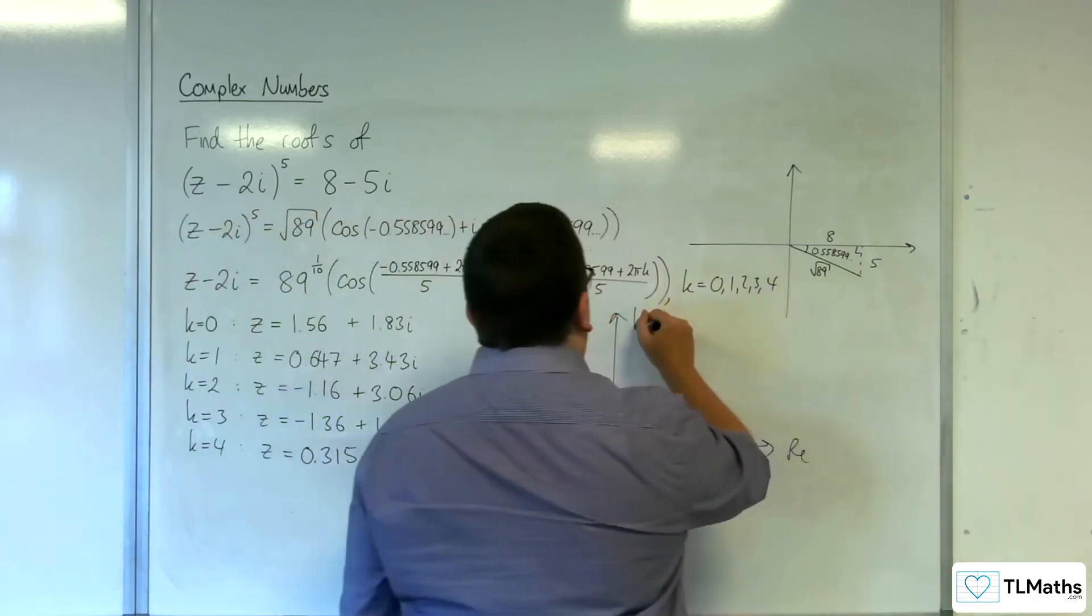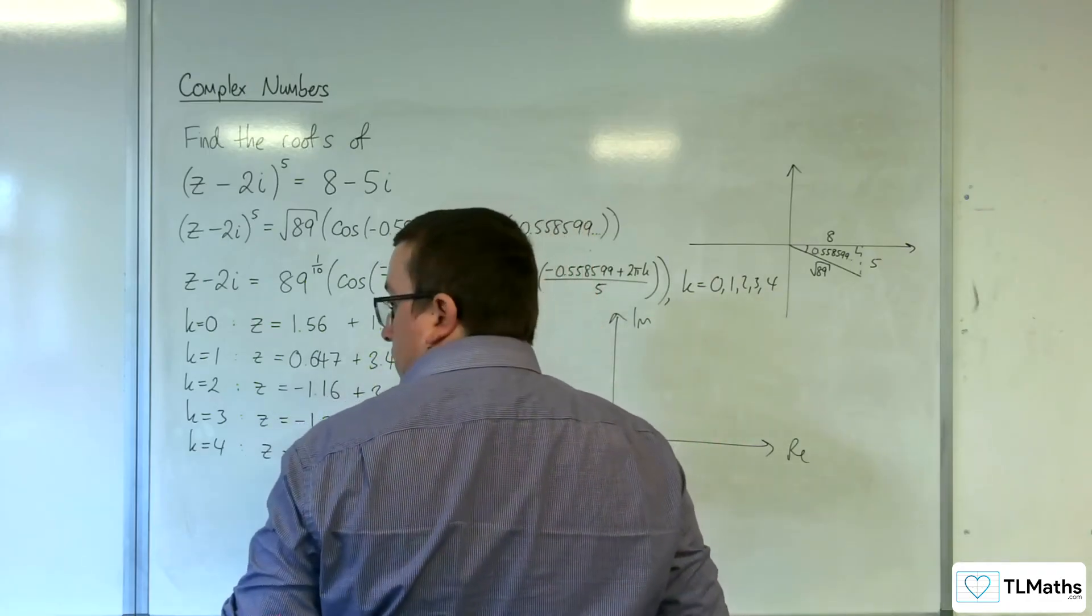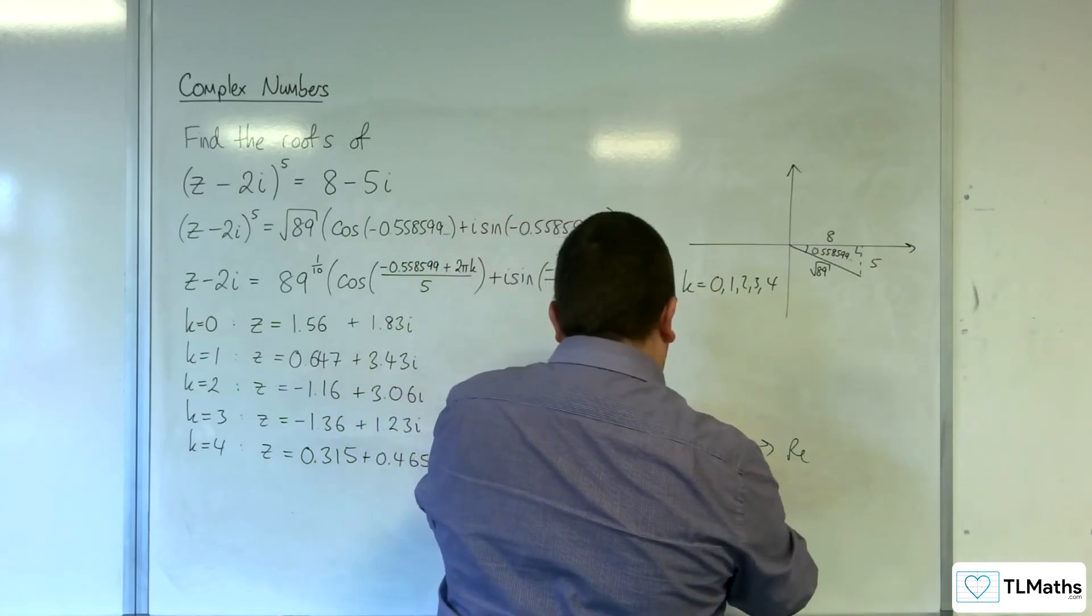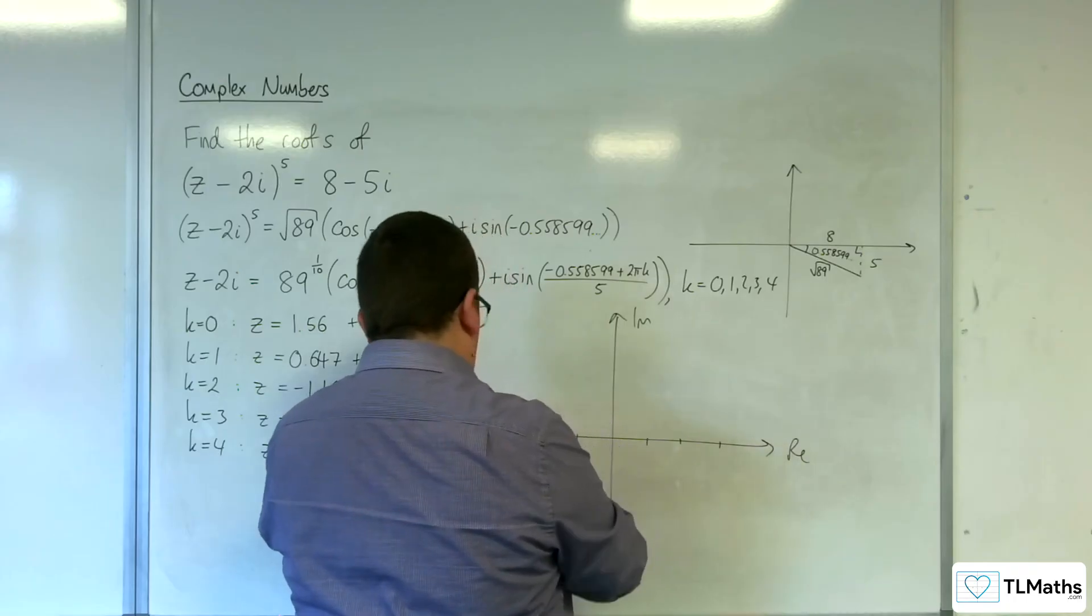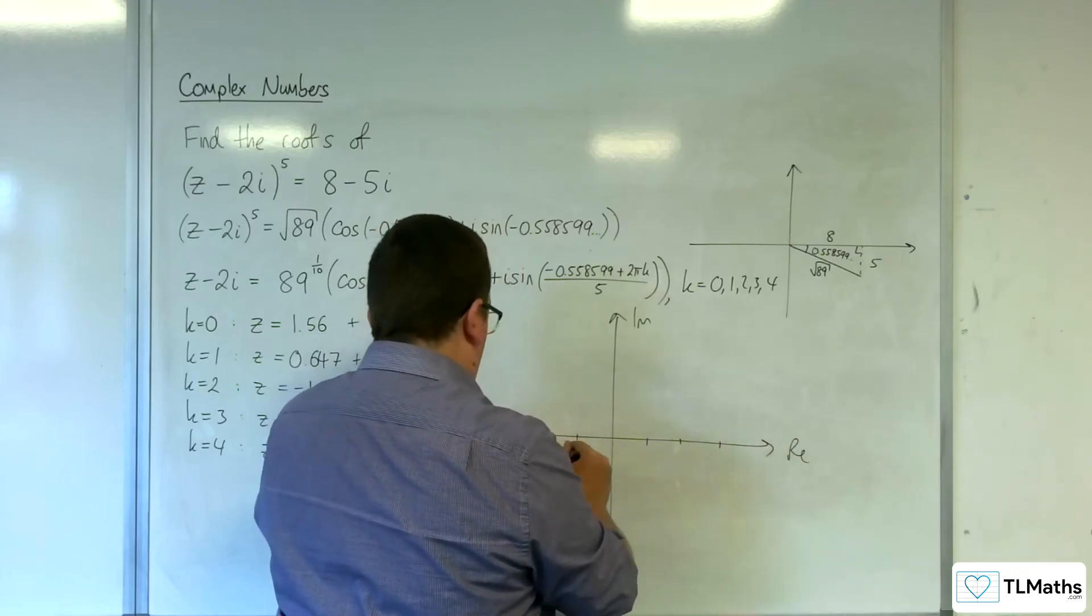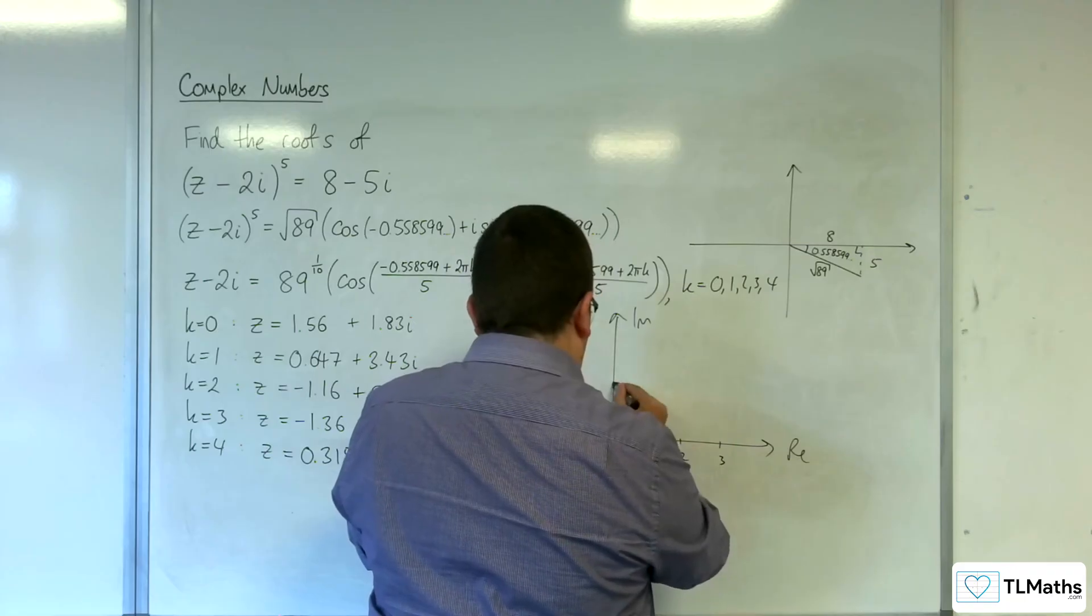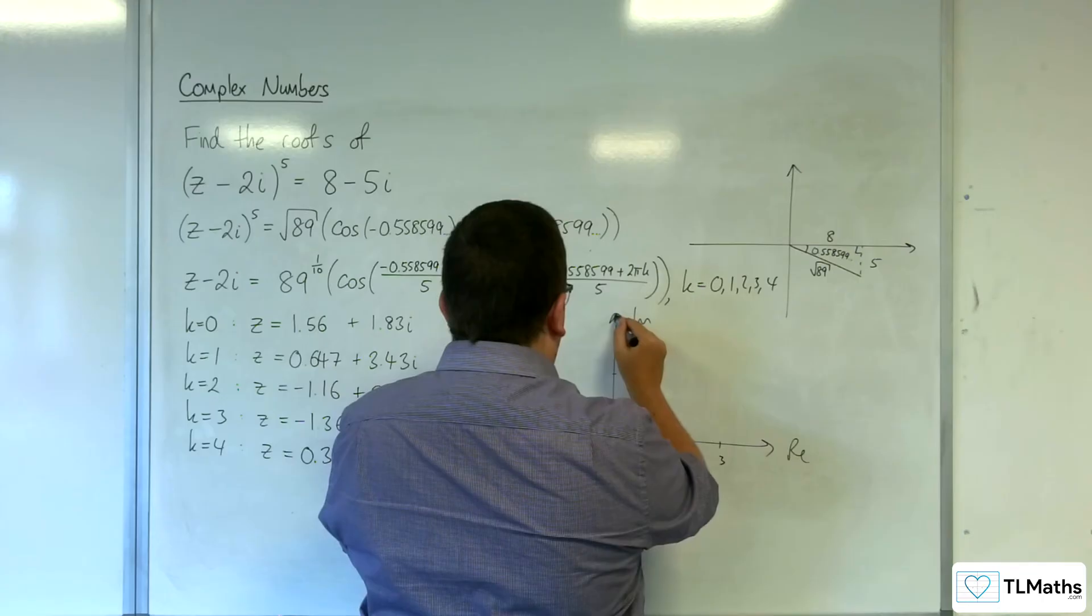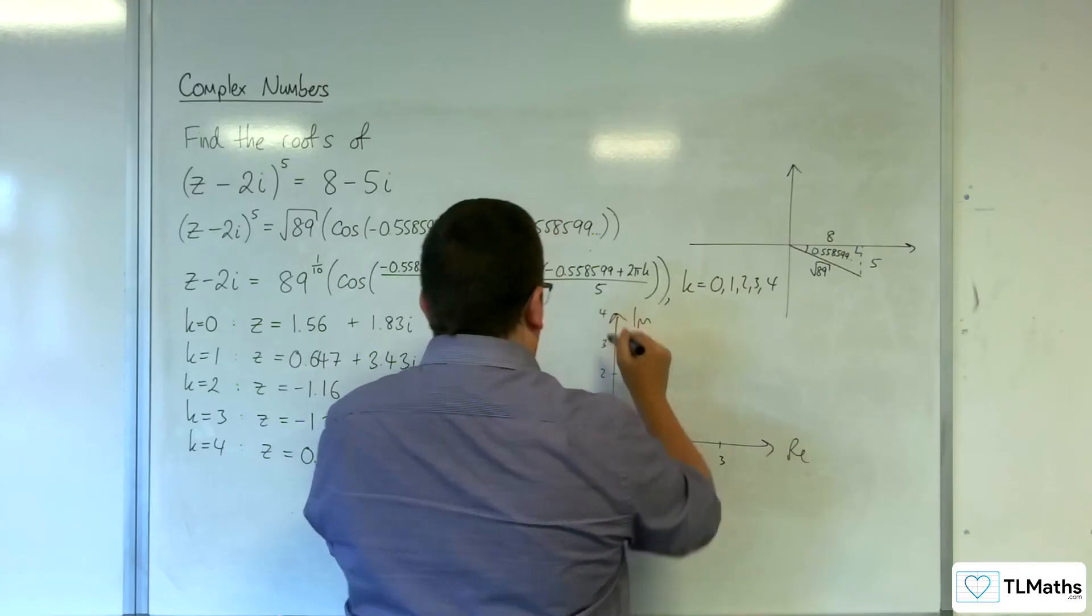Right. Real imaginary. So I'm going to have to divide this up reasonably evenly. 2, 3, 1, 2, 3, 1, 2, 3, 4 up here.